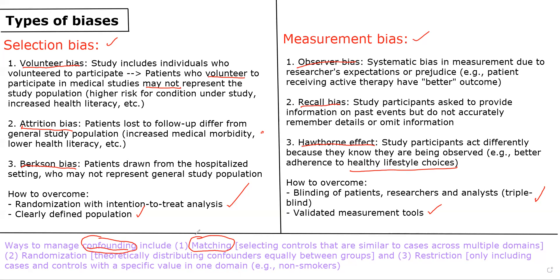The second and most commonly used way is randomization. This highlights why we love randomization and why randomized clinical trials are the gold standard — because in theory, when you randomize, you equally distribute confounders between the two study groups. For example, if you randomize 500 patients to placebo and 500 to treatment, you expect the two groups to be similar in demographics, underlying medical comorbidities, lifestyle habits, and so on. By equally distributing confounders, you greatly decrease the chance that a confounder is explaining the observed association.